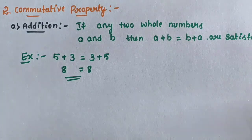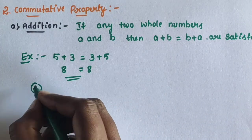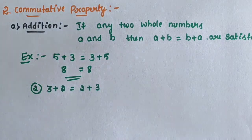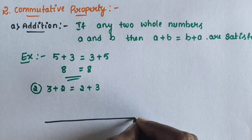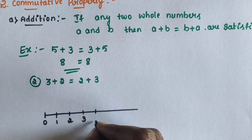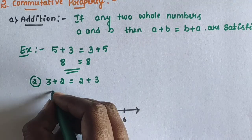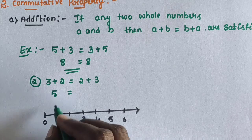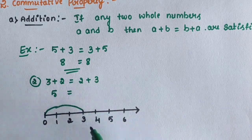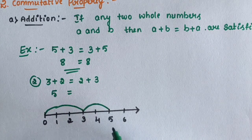Commutative property for addition using a number line. Another example: 3 plus 2 is equal to 2 plus 3. Draw the number line: 0, 1, 2, 3, 4, 5, 6. For 3 plus 2, first join 0 to 3, then add 2 more to reach 5. So 3 plus 2 equals 5.